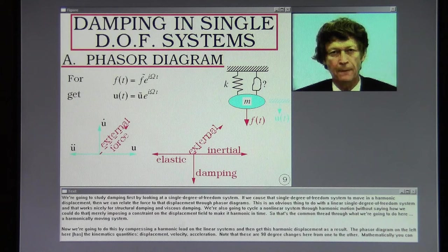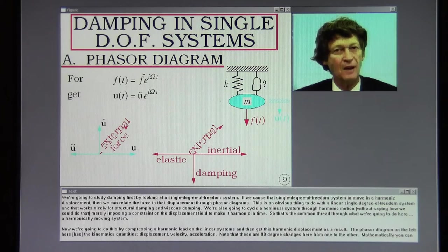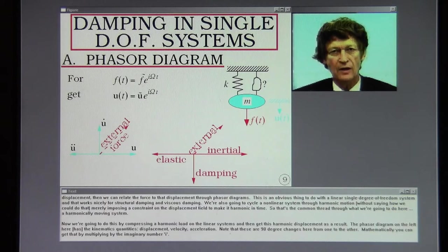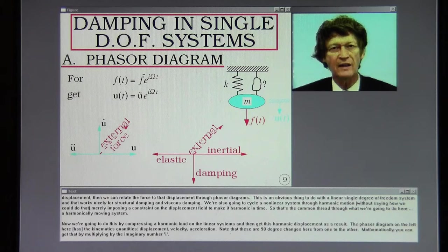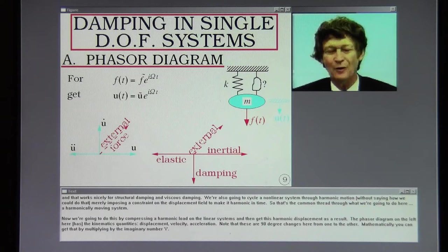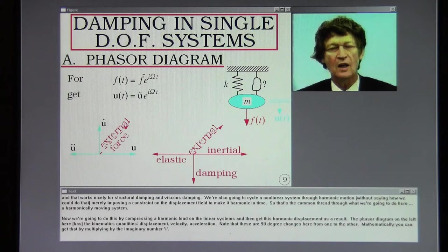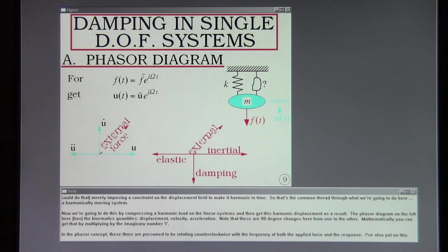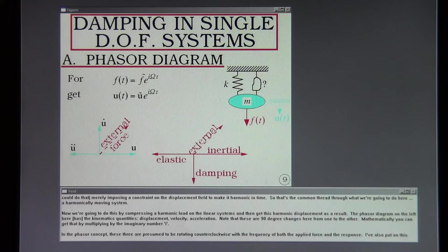We're going to study damping first by looking at a single degree of freedom system. If we cause that single degree of freedom system to move in a harmonic displacement then we can relate the force to that displacement through phasor diagrams. This is an obvious thing to do with a linear single degree of freedom system and that works nicely for structural damping and viscous damping. We're also going to cycle a non-linear system through harmonic motion without saying how we could do that, merely imposing a constraint on the displacement field to make it harmonic in time. So that's a common thread through what we're going to do here is a harmonically moving system.